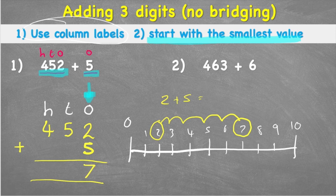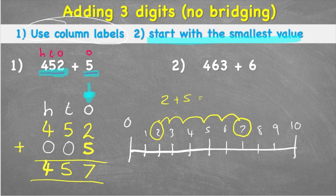In the tens column there's a 5 and nothing in the second row, so I can put a placeholder zero there — 5 add 0 is obviously 5. Same for the hundreds column: I have a 4 and nothing, so a placeholder zero — 4 add 0 is of course 4. Therefore my answer to 452 plus 5 equals 457.